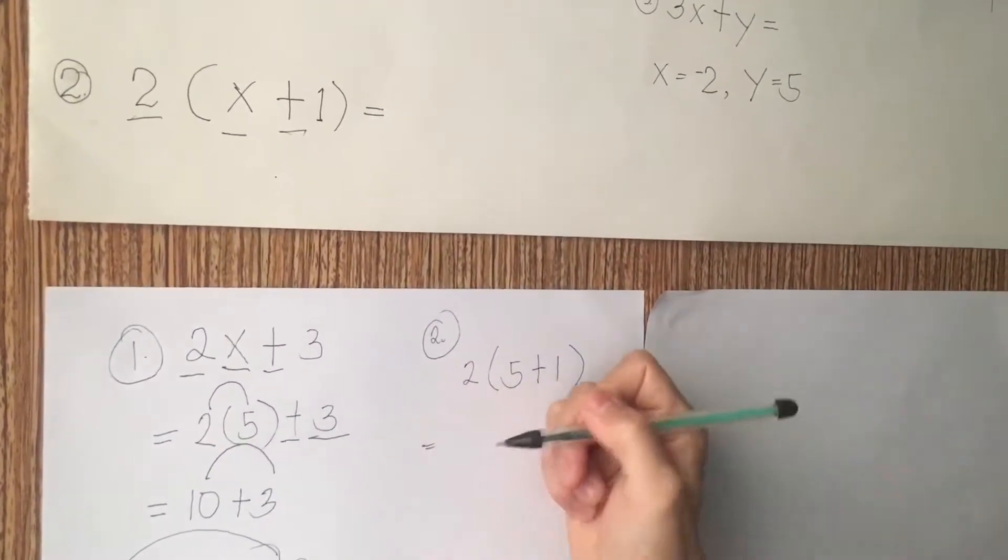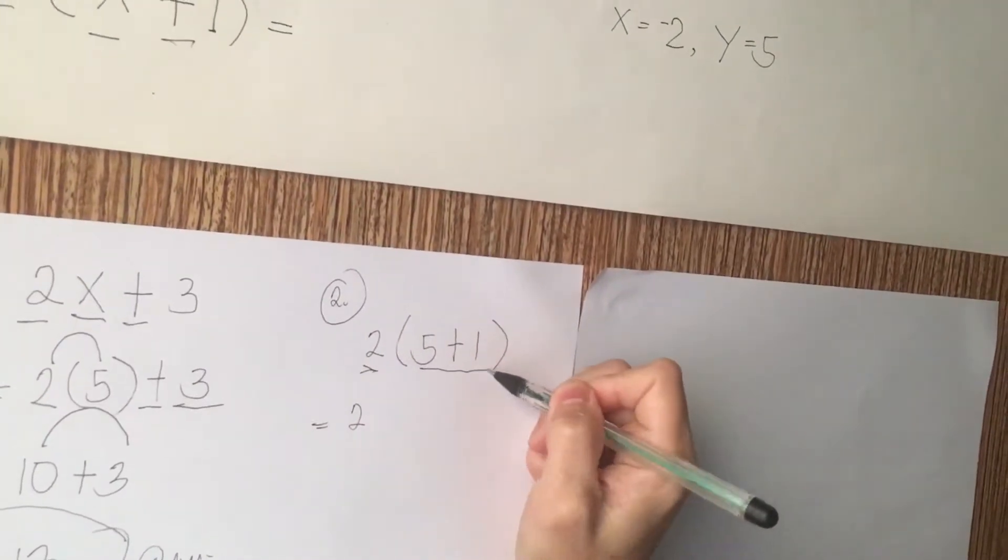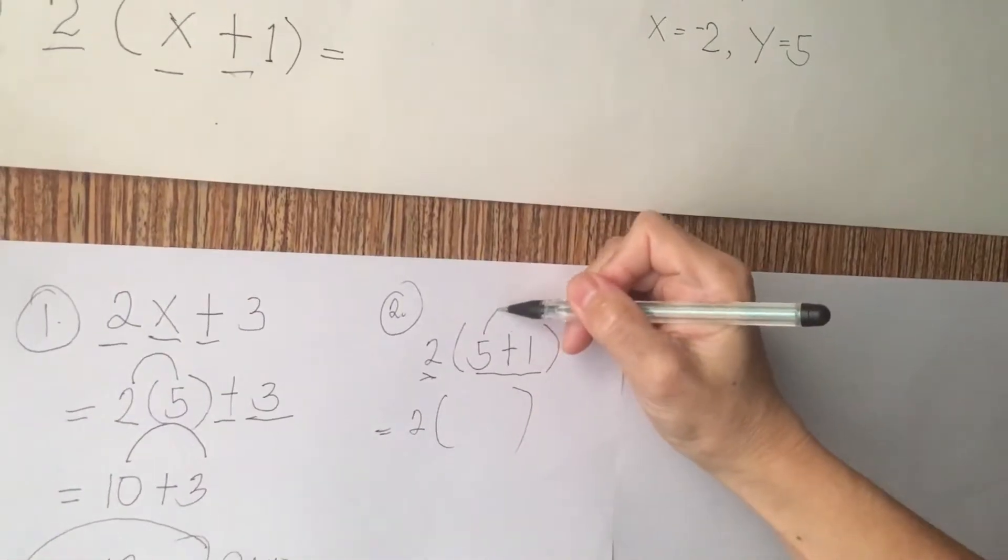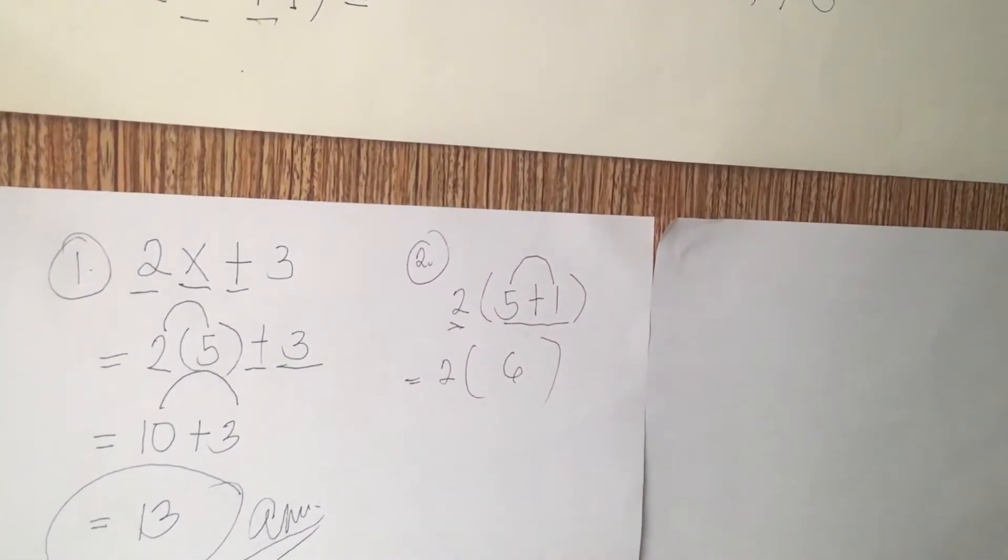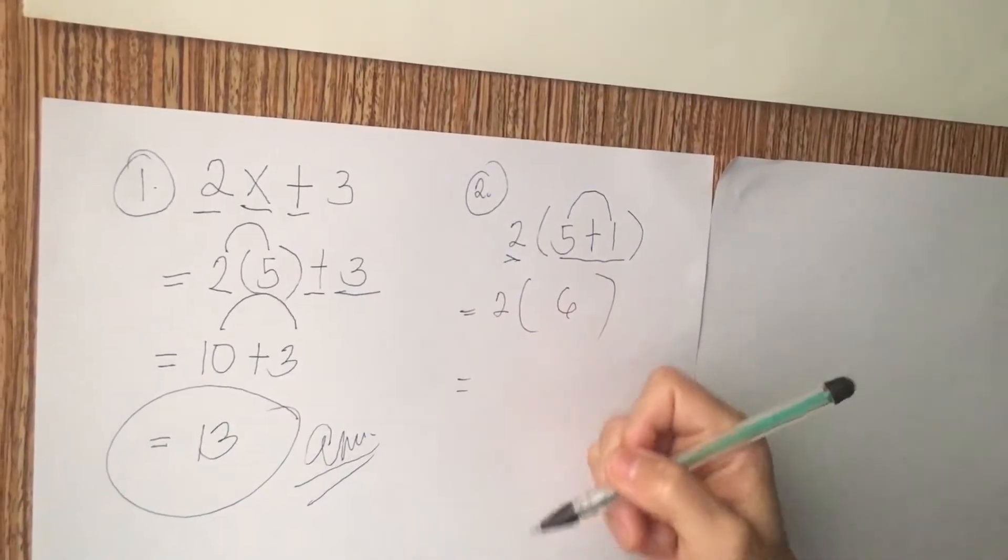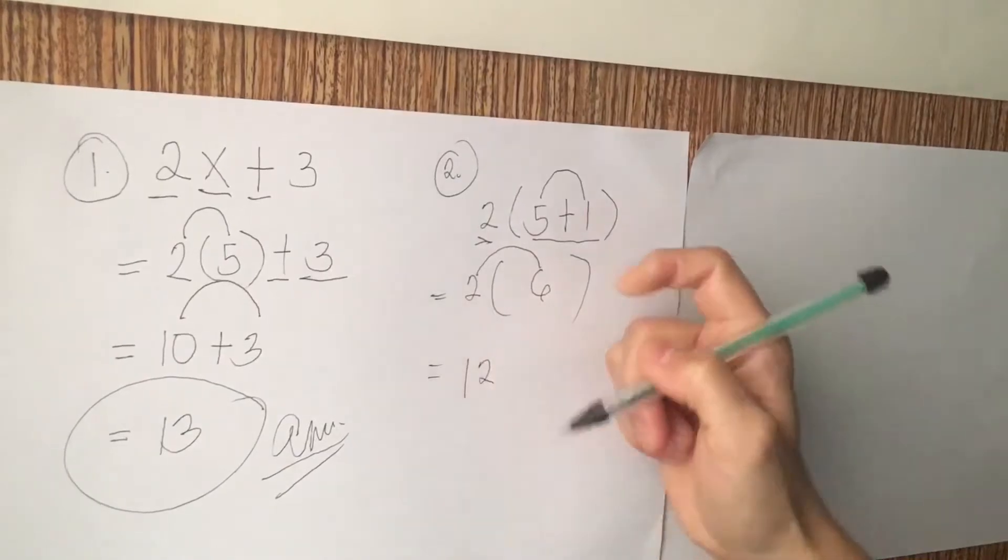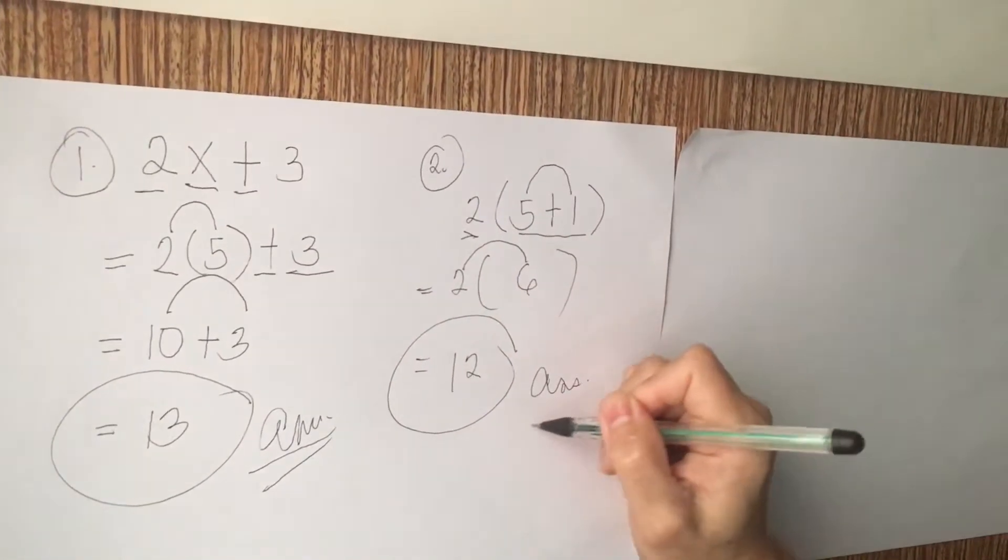Next, the operator, which is plus 1. The next thing we do, we are going to write 2 again. Next, 5 plus 1. Then, close parenthesis. We are going to add it. 5 plus 1, the answer is 6. We need to multiply 2 and 6. 2 times 6, the answer is 12. This will be the final answer.